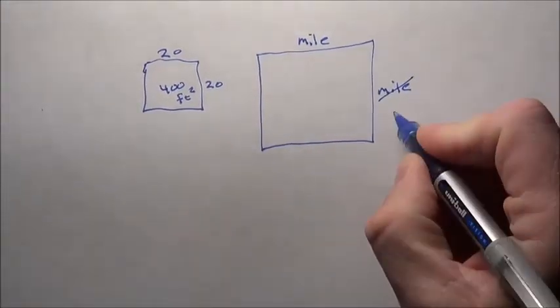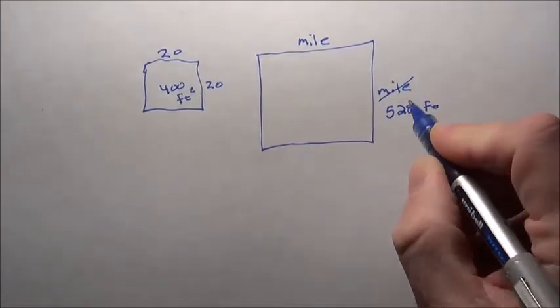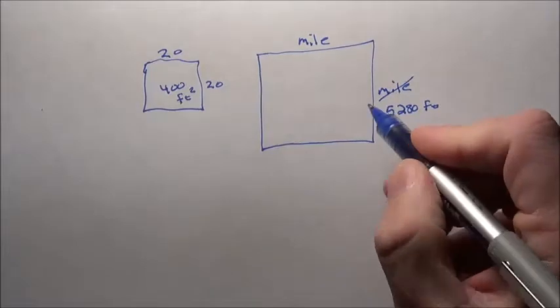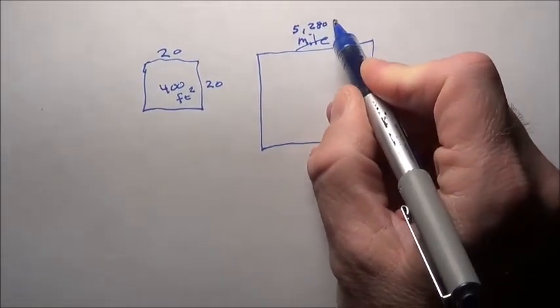So if you just think, how long is a mile? A mile is 5,280 feet. So basically, the square mile is 5,280 feet by another 5,280 feet.